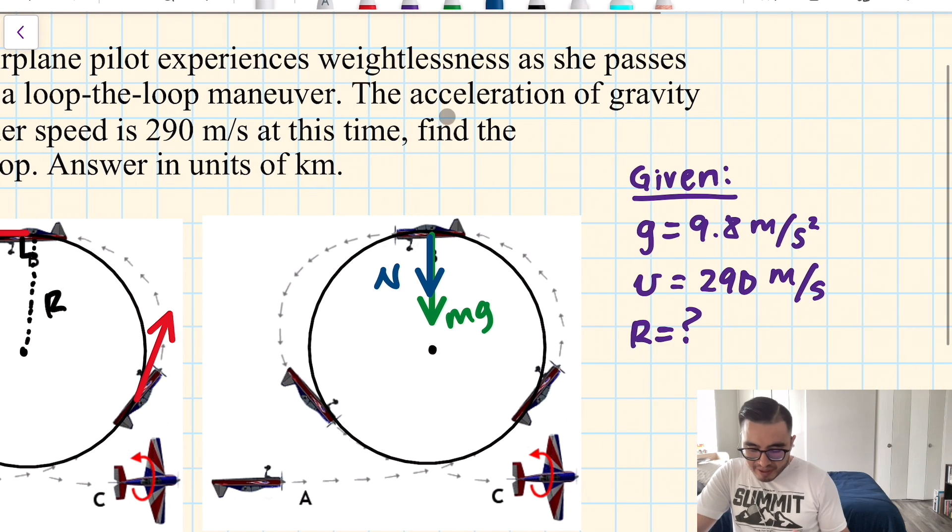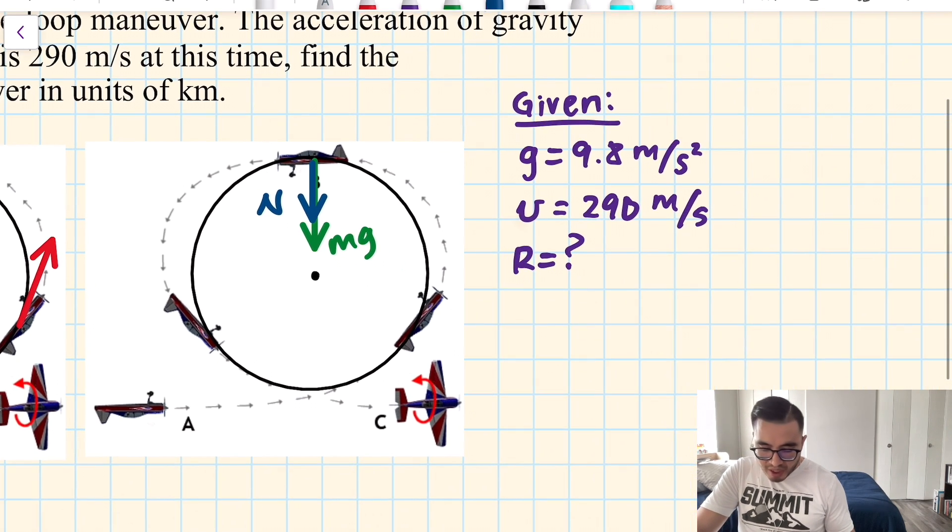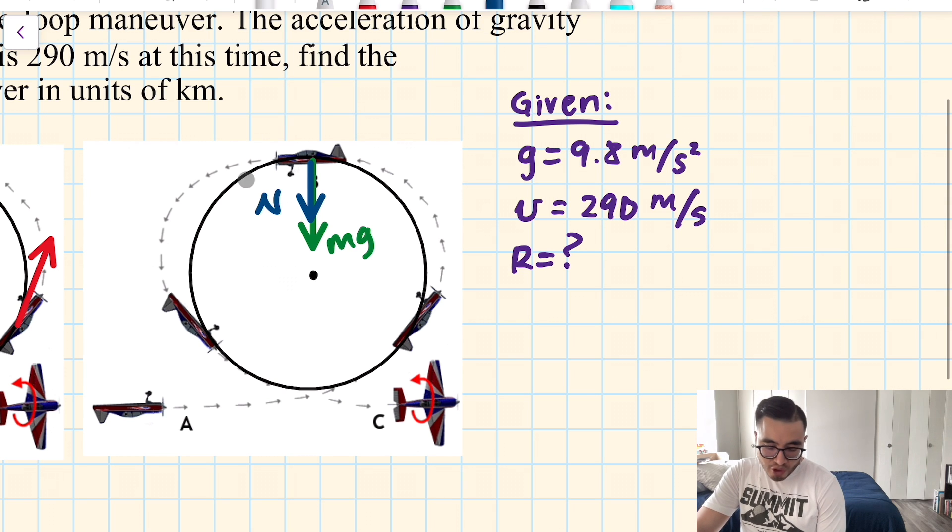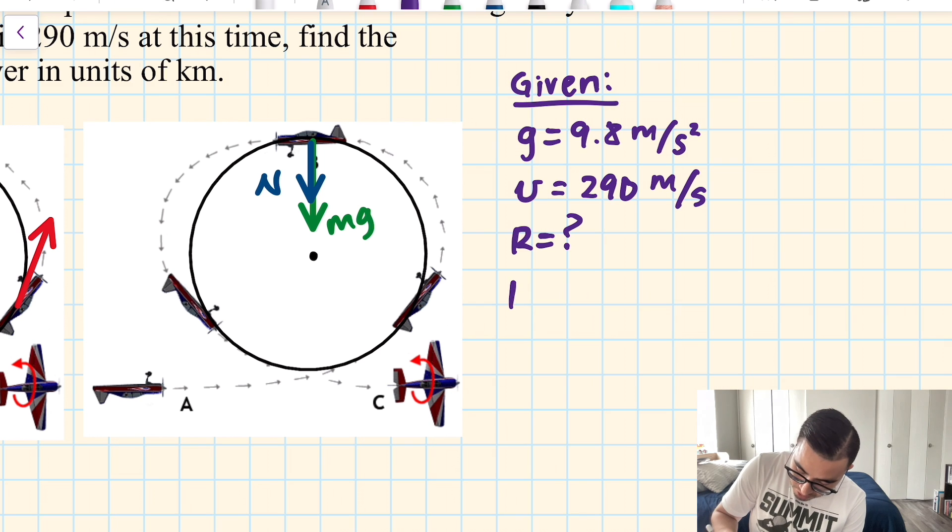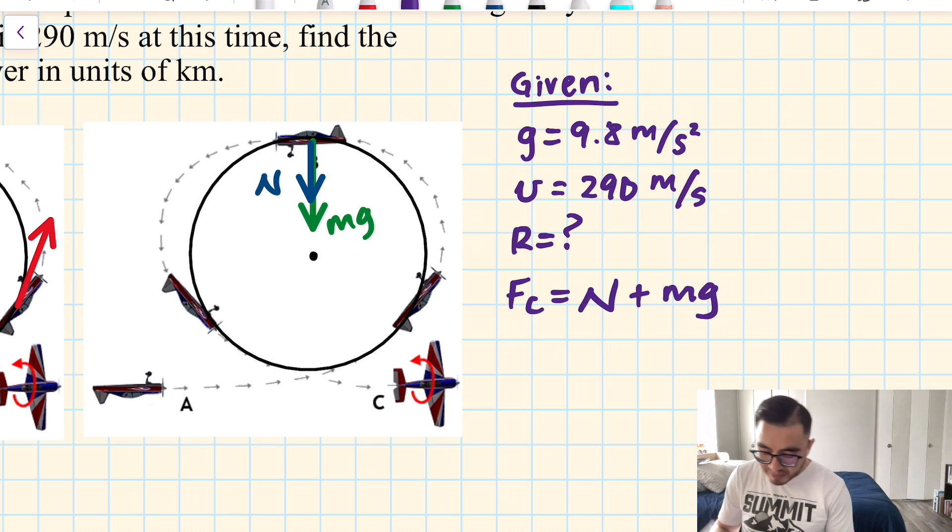Then, I want you to see that these two forces are pointing inward toward the center. That means these two forces get the label of centripetal force. The examples thus far, for the class, have shown only one force labeled as centripetal force. But in this case, it's two of them. At least for now. So, then we can say the centripetal force is normal plus the weight. I'm going to assume down is positive because we only have vectors going down for the forces. So, centripetal force is equal to normal force plus the weight of the pilot.